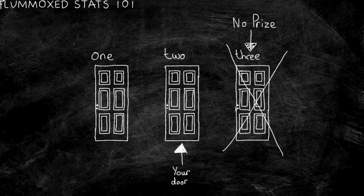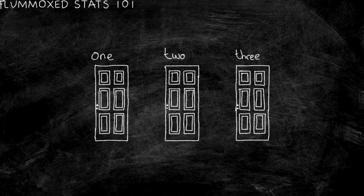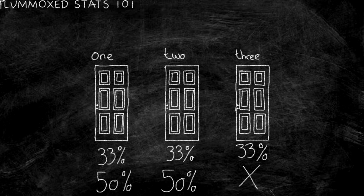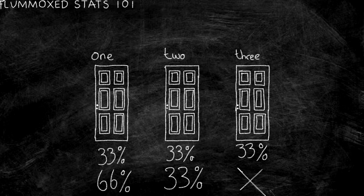Monty asks you: do you want to switch doors? The question of the Monty Hall problem, whilst looking simple, is a bit baffling in reality. There are two schools of thought. One school suggests there is a 50-50 chance the prize is behind the door, so it doesn't really matter if you switch or not. The other school suggests there is a 66% chance of getting the correct door if you switch, due to there being three doors originally and assuming the open door is still accountable within the problem.